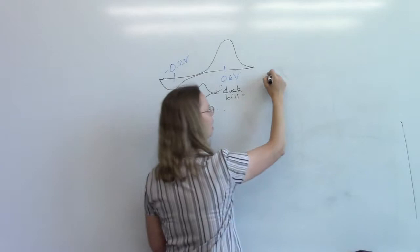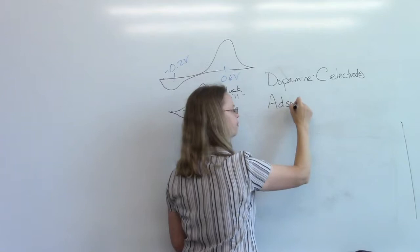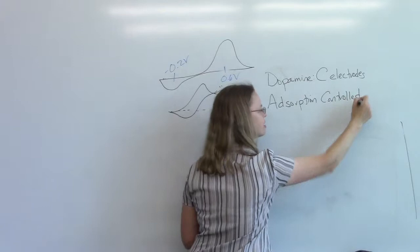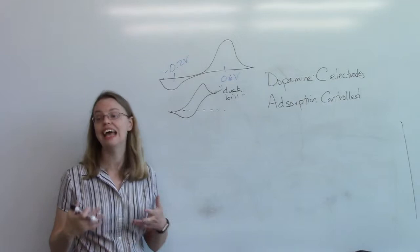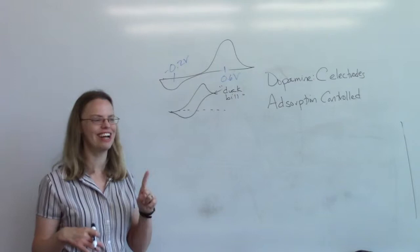And that is that dopamine, at least at carbon electrodes, is what we call adsorption controlled. I swear as I go on for the rest of the lecture, if you don't know the answer to a question you could just answer adsorption, and you would probably get it right. Because I have these features - the last one was scan rate, and all of the rest of them are adsorption.